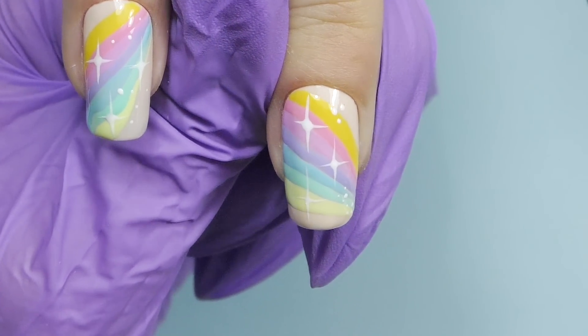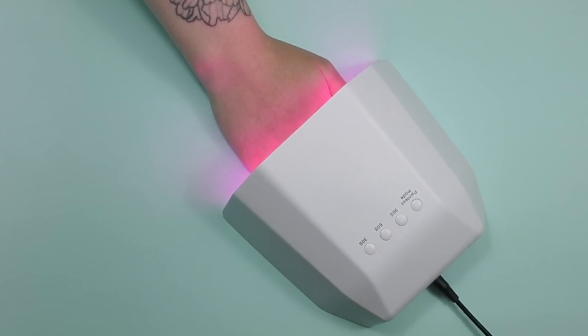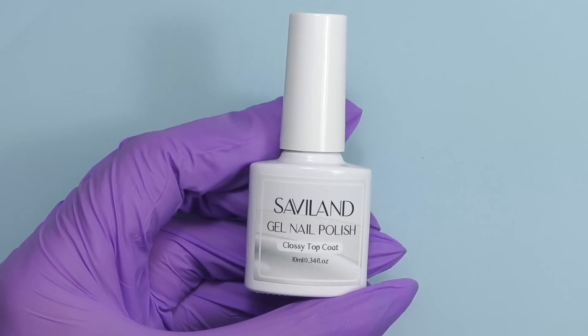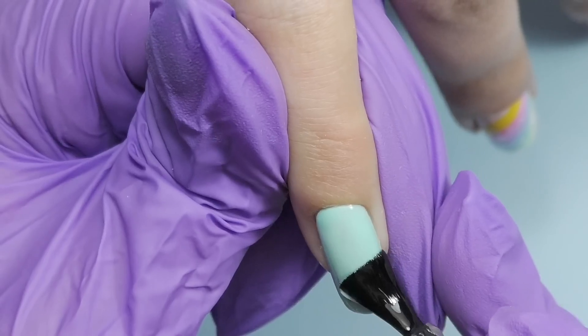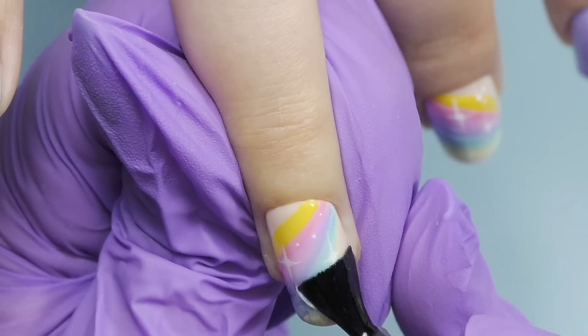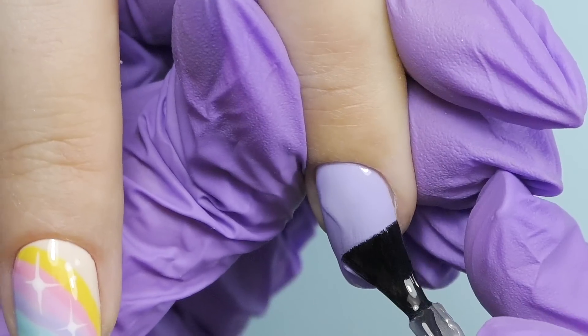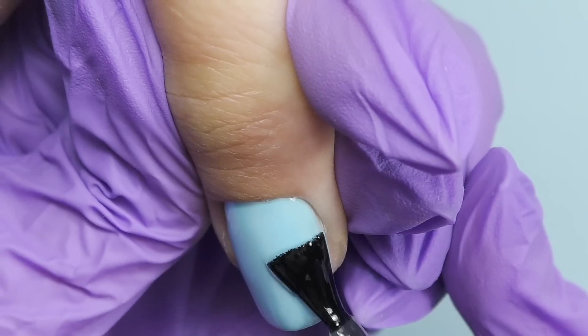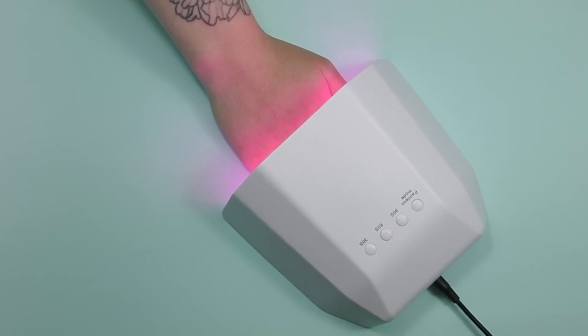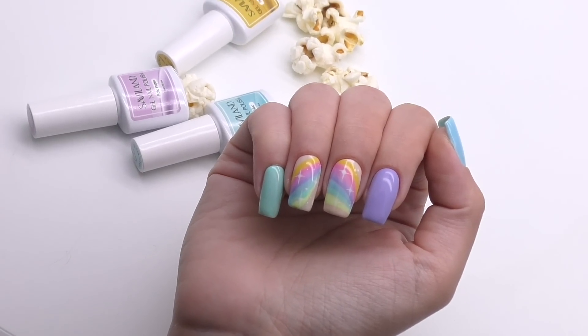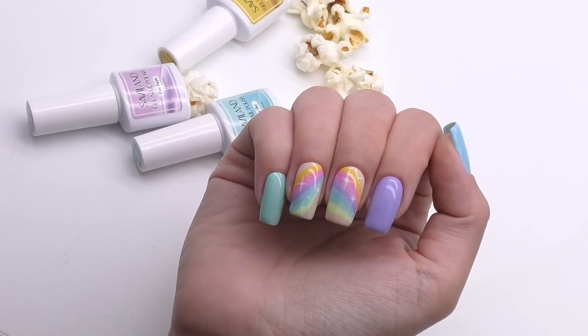Then we cure it for one minute in LED. And since my client loves smooth nails without any 3D objects on them, I'm going to apply a little more top coat than usual on these two nails to make sure that the surface is going to be smooth and she will not feel anything. Then we cure for 60 seconds and the glossy design with the dreamy rainbow is finished.